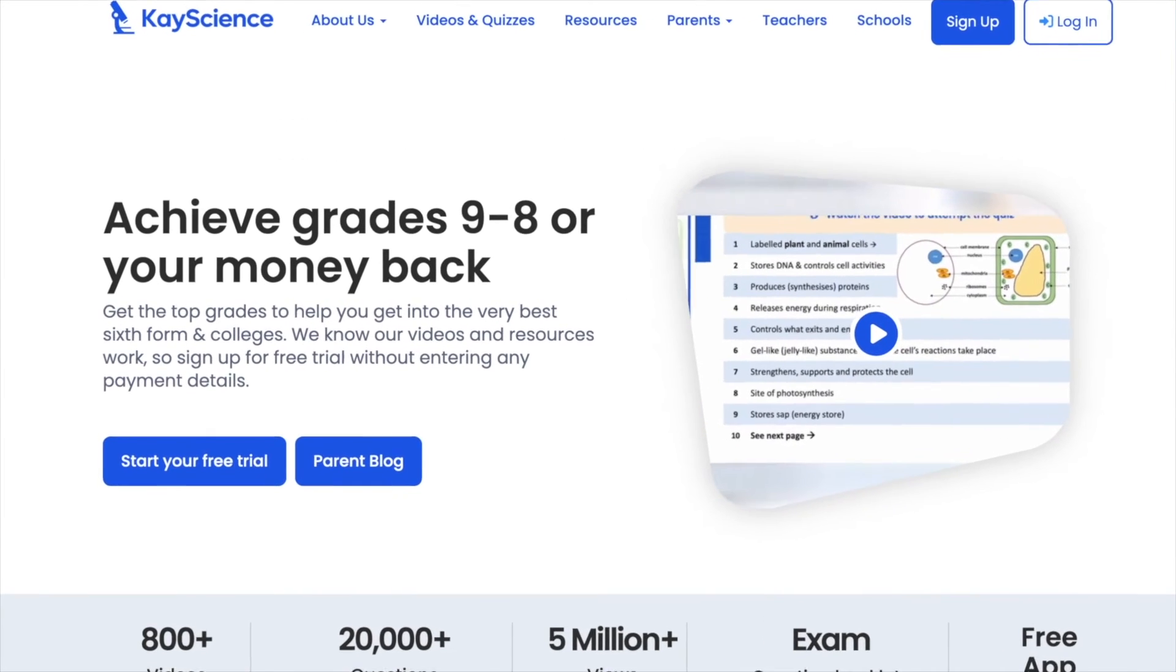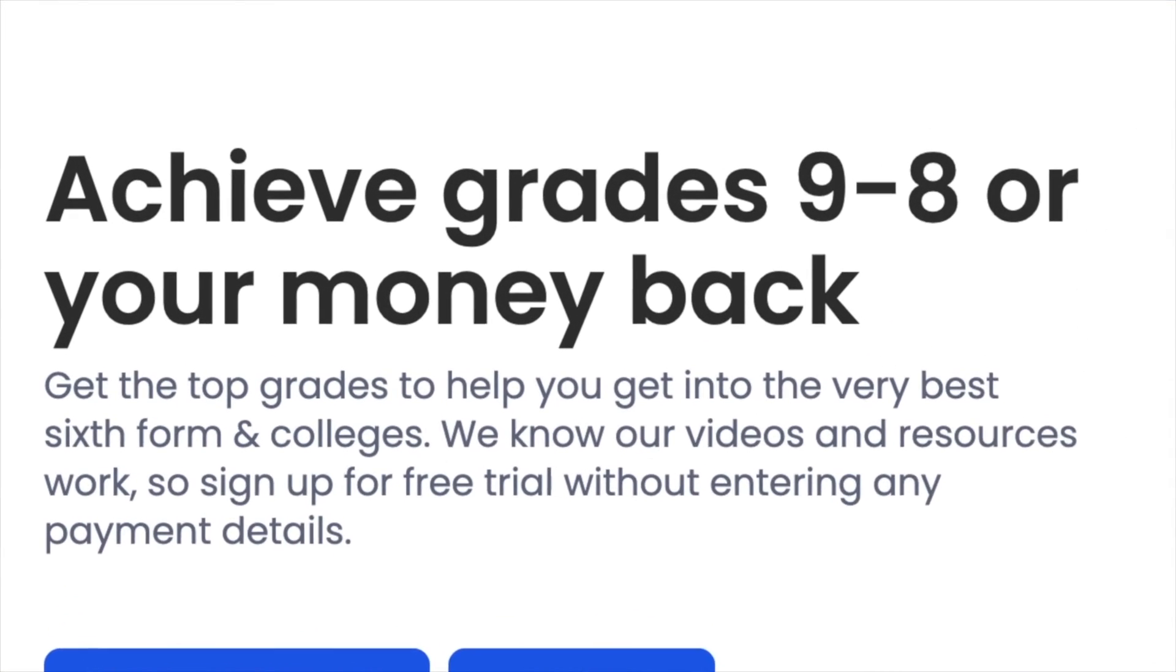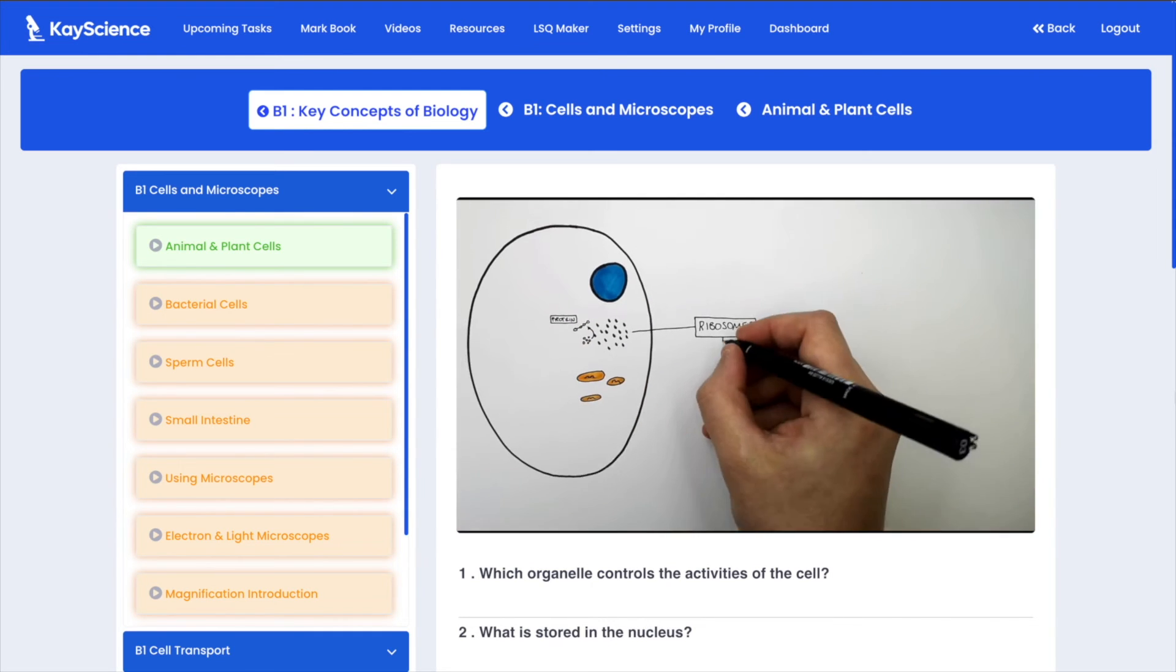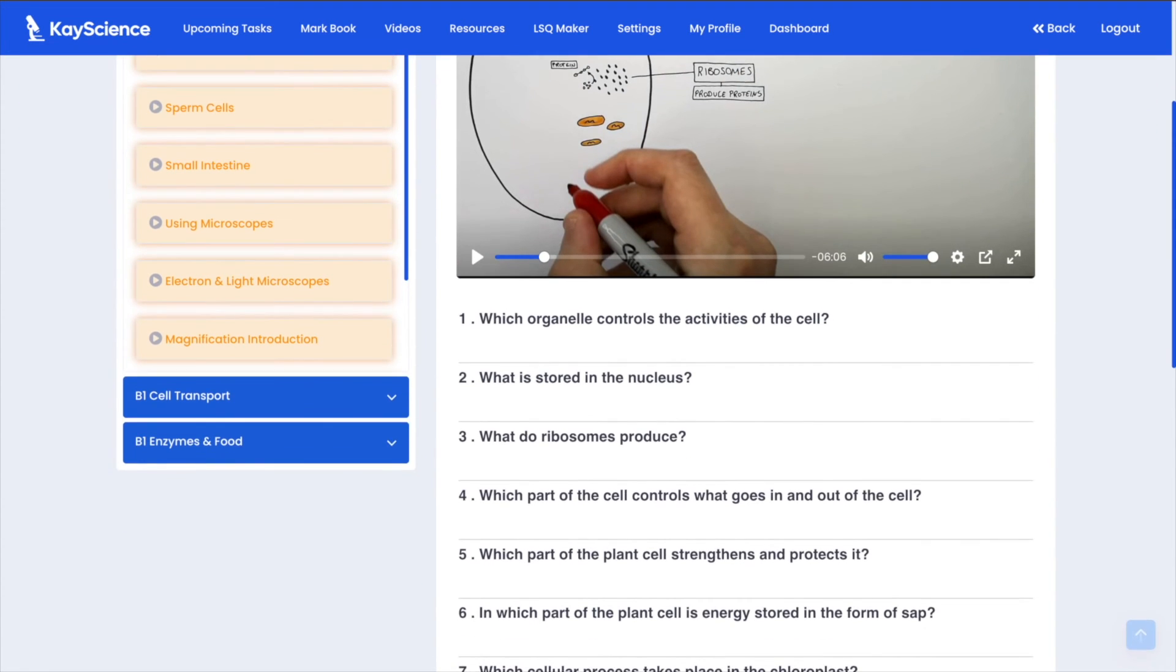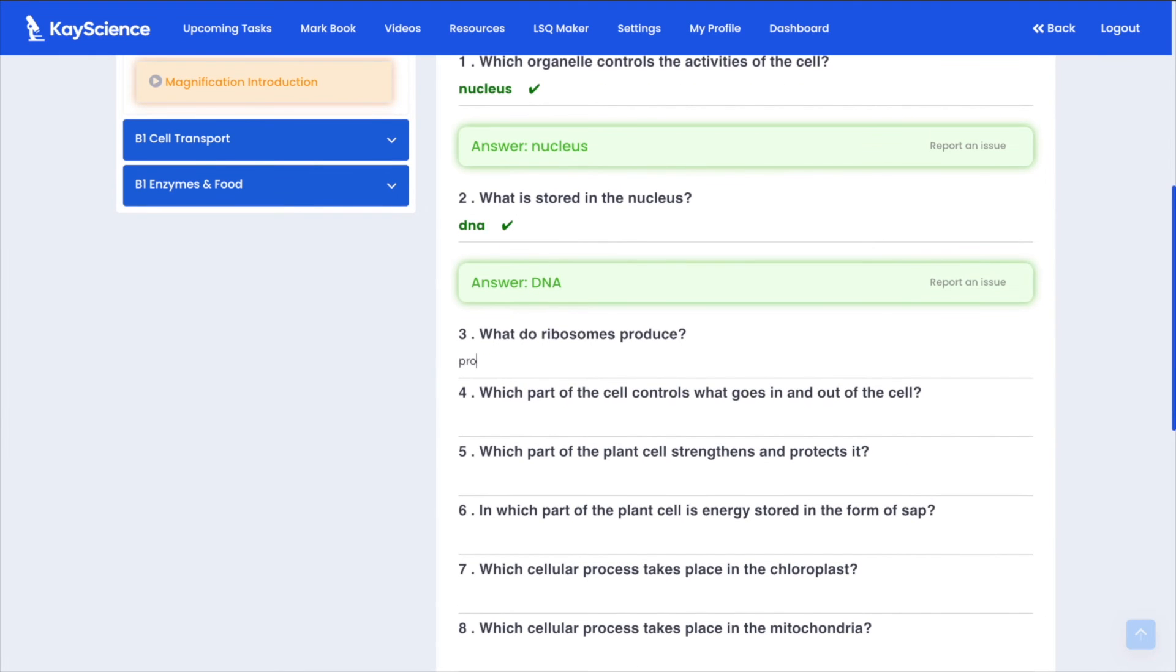Welcome to kscience.com, the only website that can guarantee you grades 8 and 9 in science. We'll get access to hundreds of dual-coded biology, chemistry and physics videos which are specific to your exam board. Students can answer self-marking quizzes directly beneath the videos.